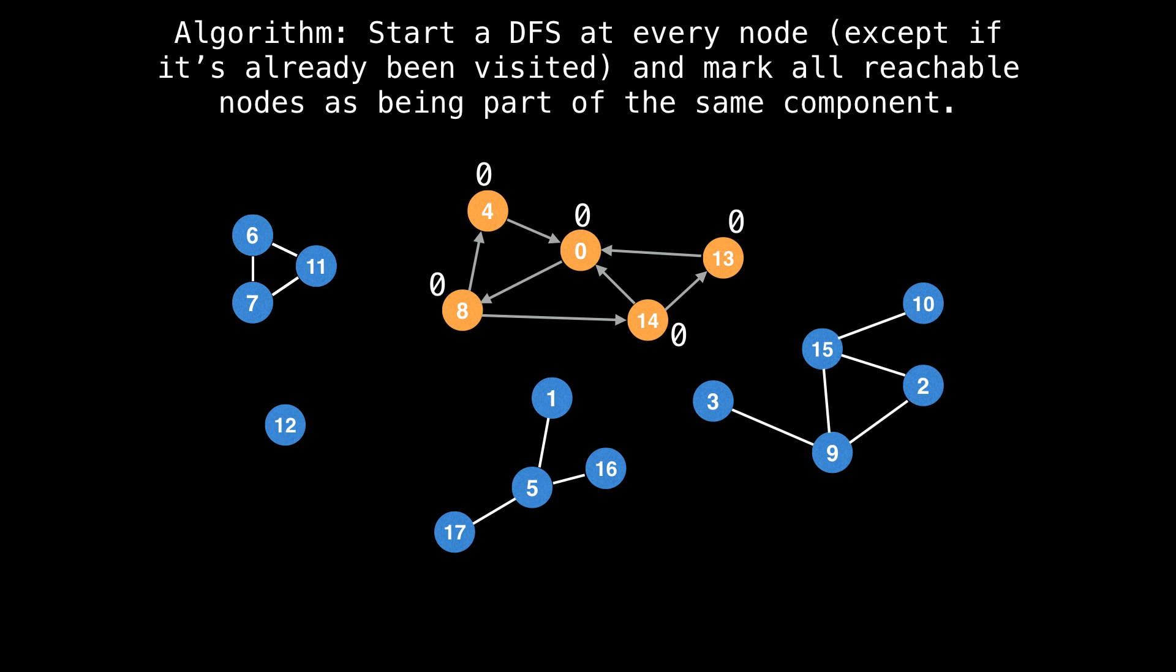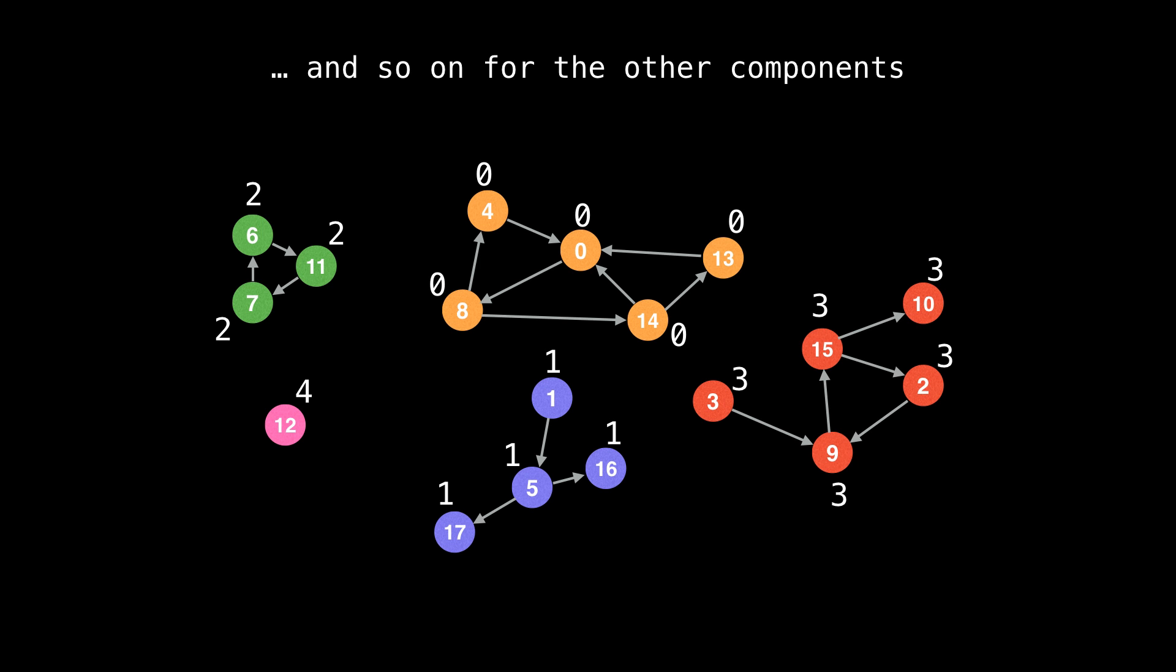So go to node one next. At node one, start a depth first search there. Go to node five, label it with a one. Five goes to 17, label it with a one, backtrack, go to 16, also label it with a one. We're finished exploring this component, then we would go on to node two, wherever node two is, then explore that component, then node three, explore node three's component, unless node three has already been visited, and so on. So you do this for every component, and eventually we get to label all the components, and we use a depth first search to do that.